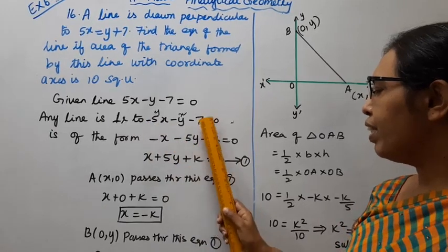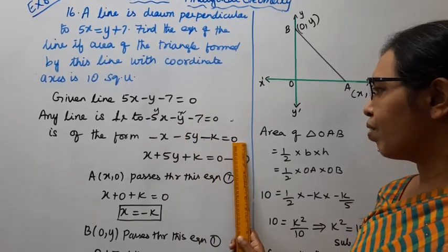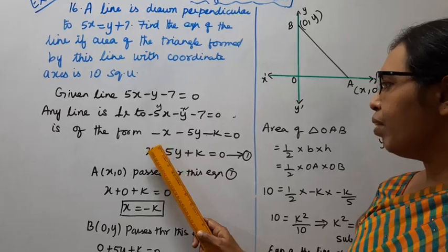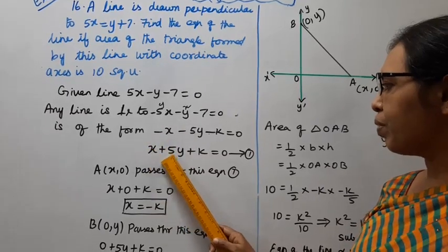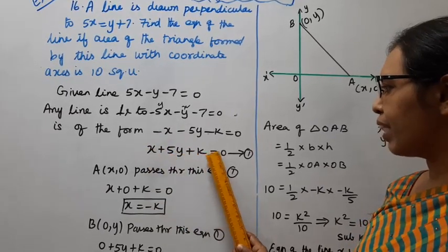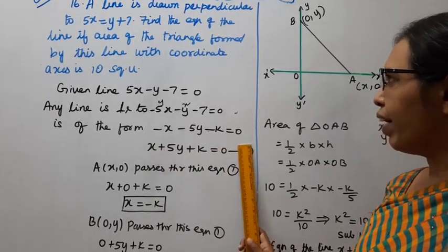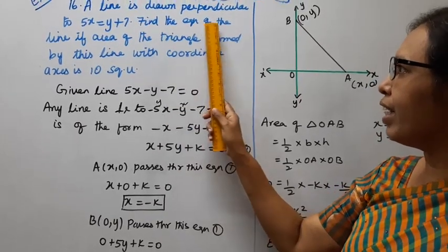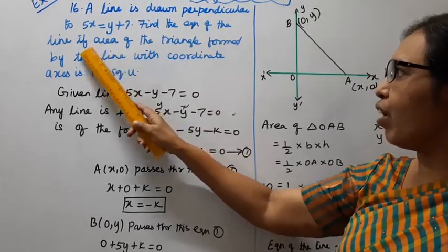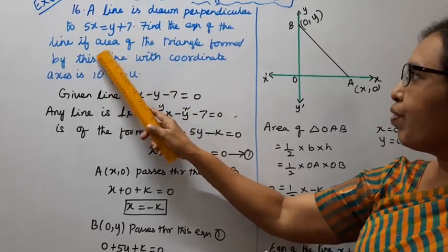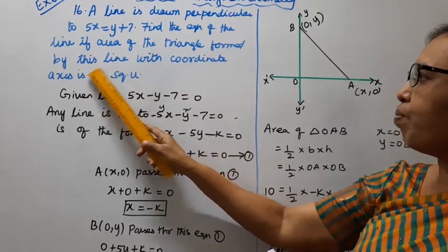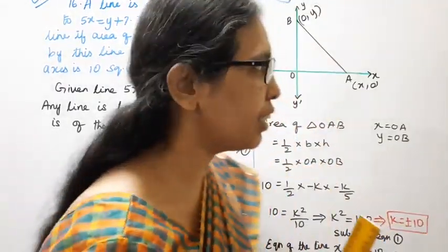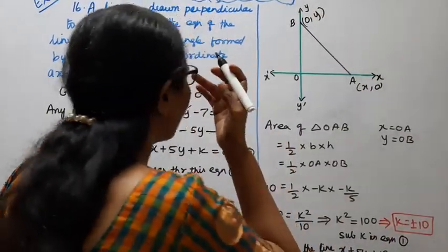Now, how do we find the equation of the line if the area of the triangle formed by this line with the coordinate axes is 10 square units?